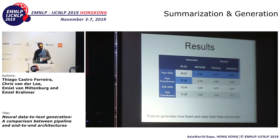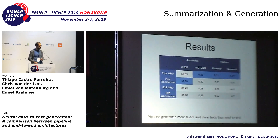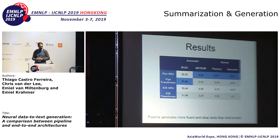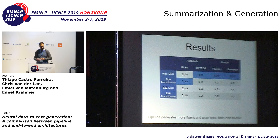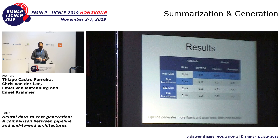Looking at the automated metrics and the quantitative evaluation, overall the pipeline seems to outperform the end-to-end system. The transformer is achieving the highest BLEU scores and the gated recurrent units are performing best on the other metrics. Fluency and clarity were also significantly better than the end-to-end scores.